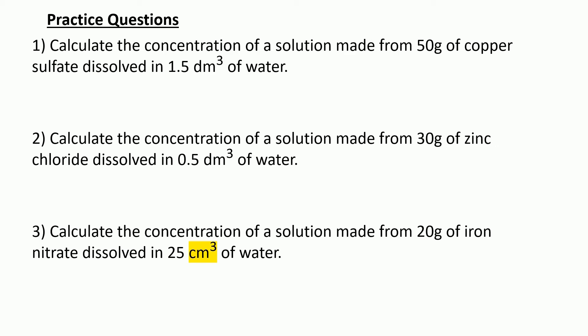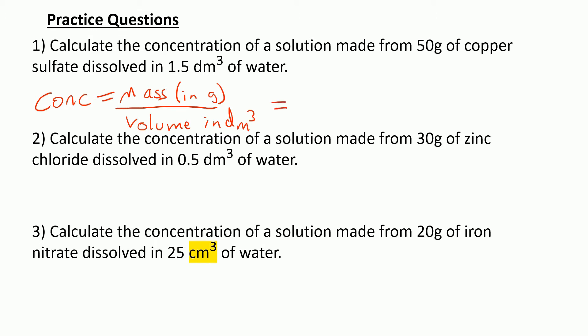Let's have a go at some practice questions — pause the video, have a go on some scrap paper, show all your working out, and then we'll see how you got on. Question one: concentration equals mass in grams divided by volume in dm cubed. It's really important to show your working because you're more likely to get the right answer and you'll get marks credited even if you slip up. So: 50 grams divided by 1.5 dm cubed equals 33.3 g per dm cubed.